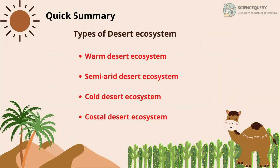After that, the types of desert ecosystem. Mainly, desert ecosystems are of four types: warm desert ecosystem, semi-arid desert ecosystem, cold desert ecosystem, and coastal desert ecosystem.